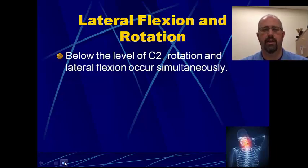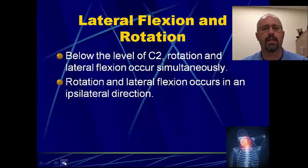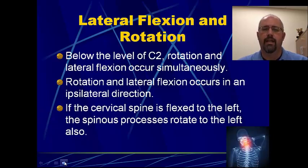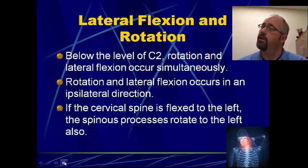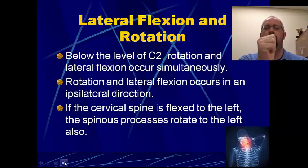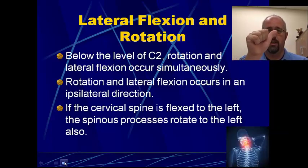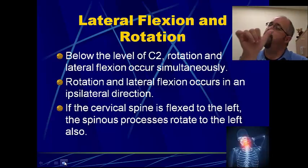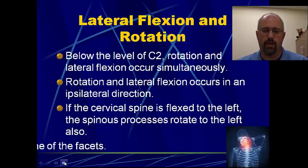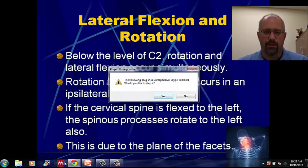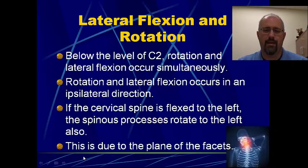If you try and do this, you end up with this element of rotation that occurs — and that is purely because of the positioning and the shape of the facet joints. Rotational lateral flexion occurs in an ipsilateral or same direction. So the cervical spine flexes to the left, the spinous process rotates to the left. If you go to the left, the spinous process goes to the left. Now your nose goes to the right, but that's left rotation because you have to think about the rotation in terms of where the spinous process is. So you side flex to the left, spinous process goes to the left, your nose goes to the right. It's all due to the plane of the facets.